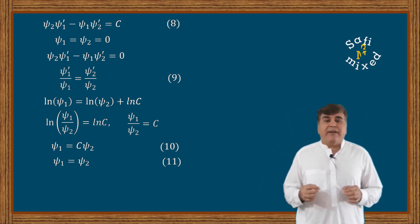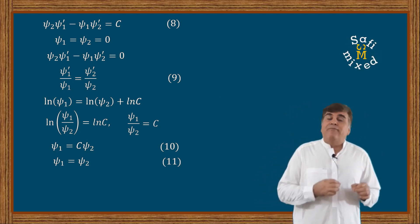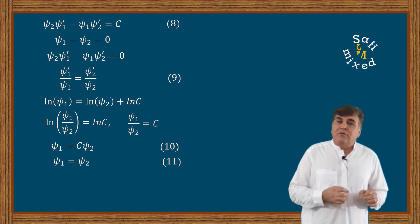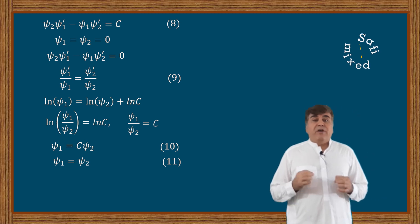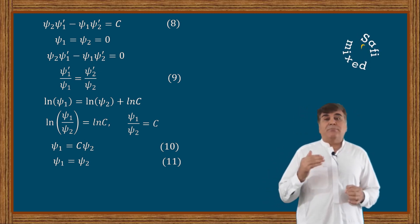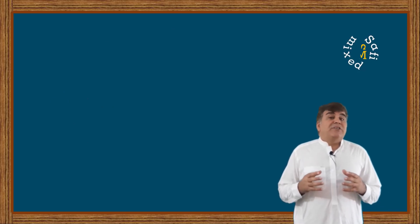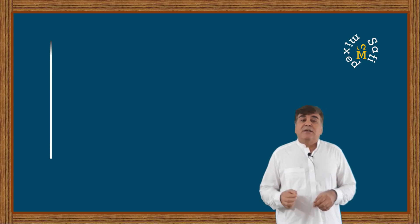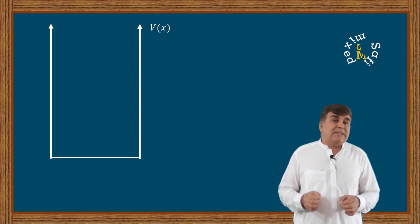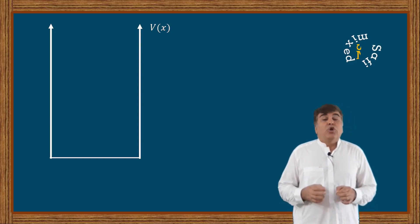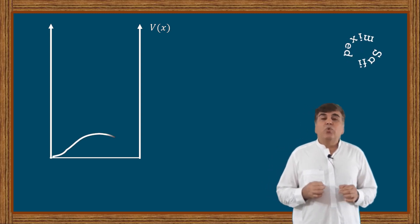This result means the two wave functions are identical, so there is no degeneracy in the wave functions of bound states for a one-dimensional potential. The third property concerns the number of nodes. Using the oscillation theorem, it can be proven that the ground state wave function is nonzero everywhere except at the boundaries, meaning the ground state wave function has no node.